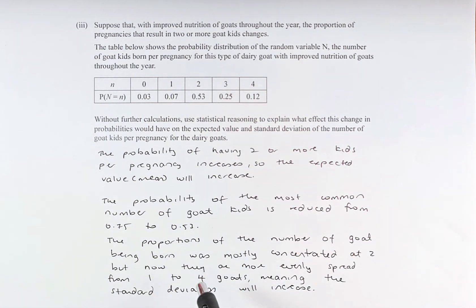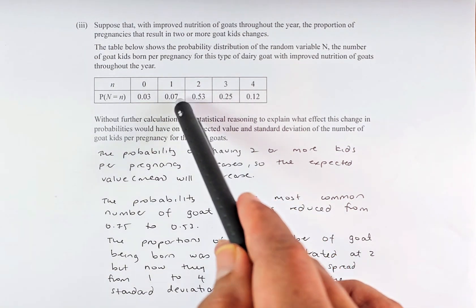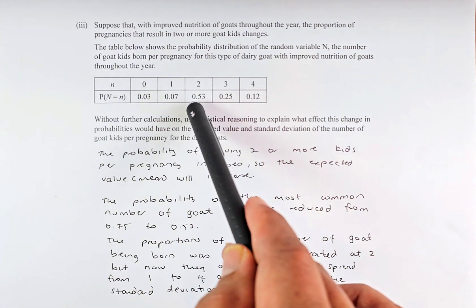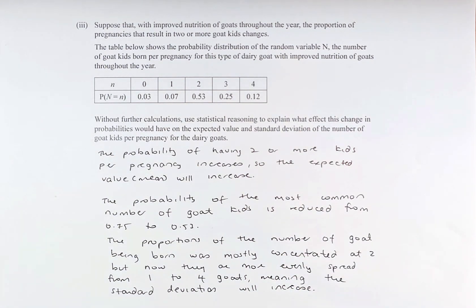So now instead of only 2 at the highest number, the previous one is all very small number here and 2 was the most number, now it is more evenly spread out from 1 to 4. So this shows because they are more spread out, the standard deviation or the distribution will increase and that is why the standard deviation as well as the range and the spread will increase.